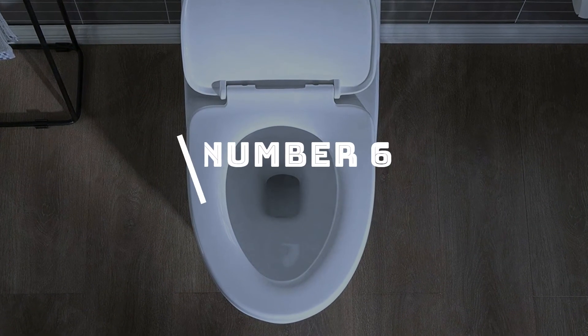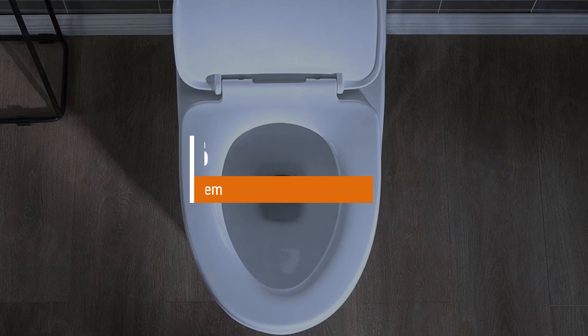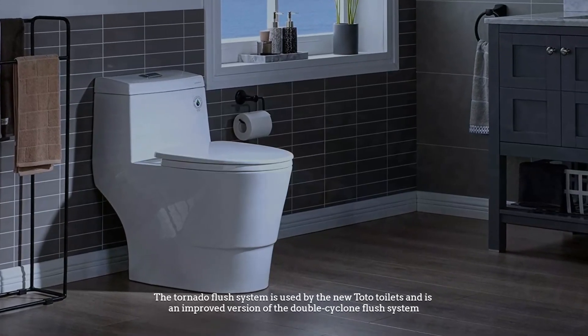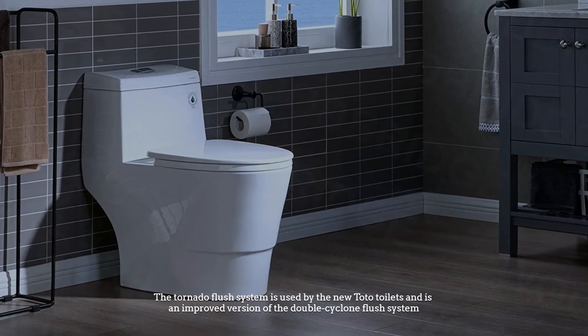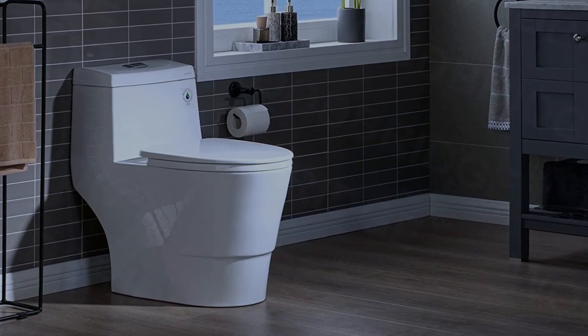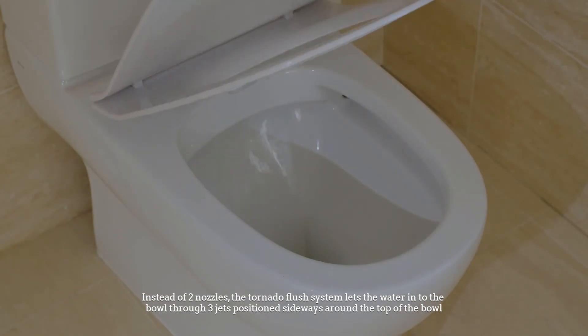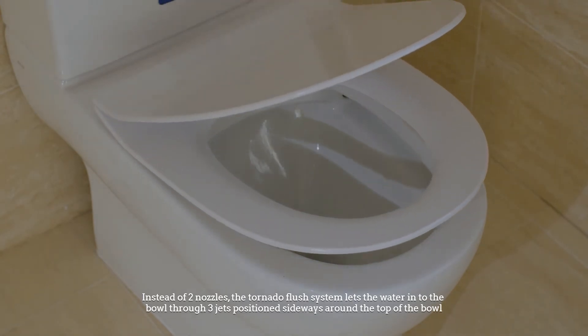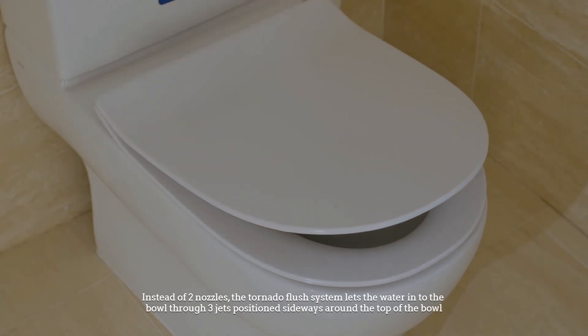Number 6: Tornado Flush System. The Tornado Flush System is used by the new Toto toilets and is an improved version of the double cyclone flush system. Instead of two nozzles, the Tornado Flush System lets the water into the bowl through three jets positioned sideways around the top of the bowl.